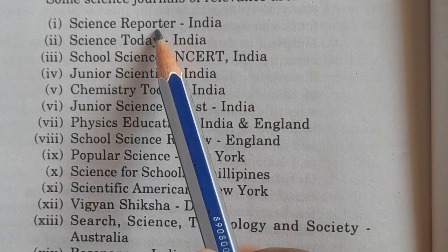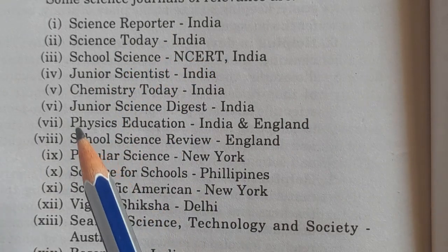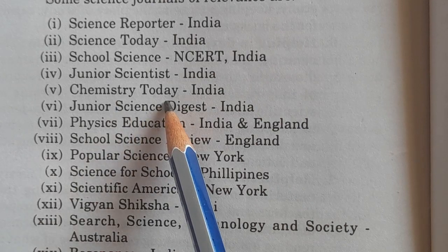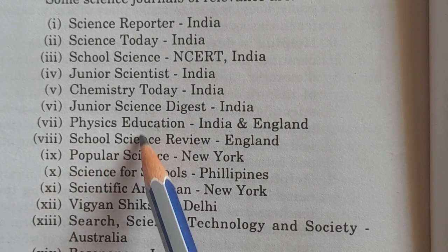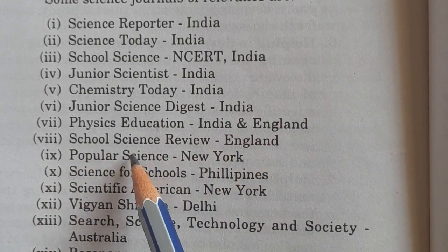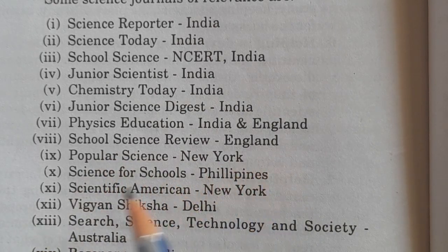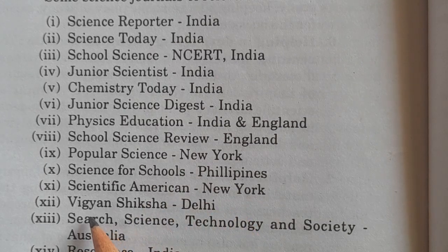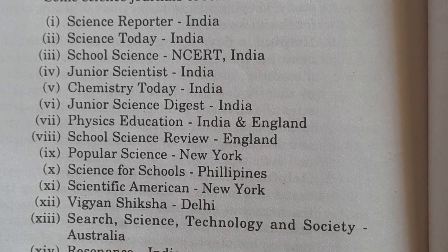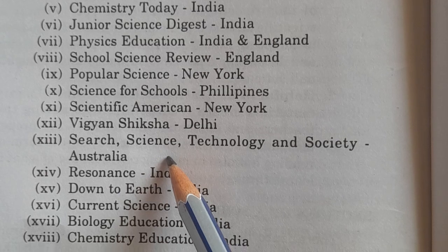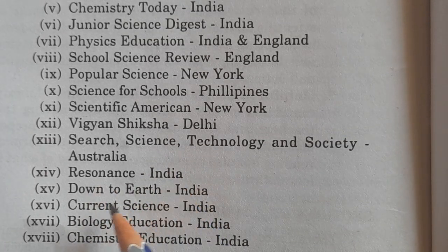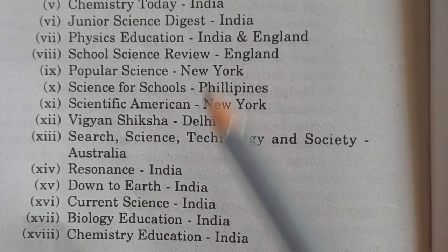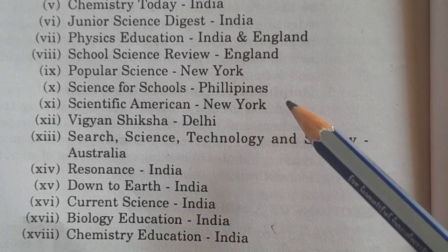Examples of such journals include: Science Reporter (India), Science Today (India), School Science and NCERT Journal, Junior Scientist, Chemistry Today, Junior Science Digest (India), Physics Education India and England, School Science Review (England), Popular Science (New York), Science for Schools (Philippines), Scientific American (New York), Vigyan Shiksha (Delhi), Science Technology and Society (Australia), Resonance (India), Down to Earth (India), Current Science (India), Biology Education (India), and Chemistry Education (India). These are the well-known science journals that should be part of the science library.